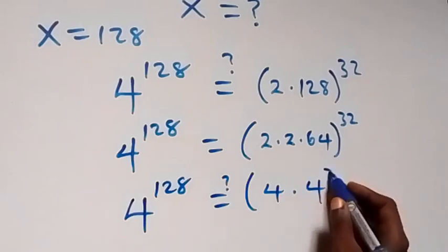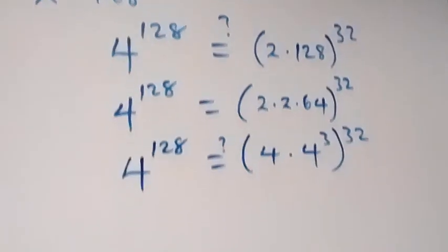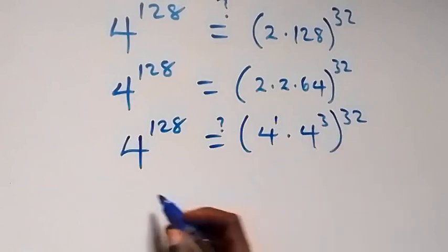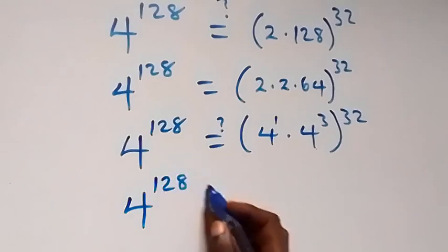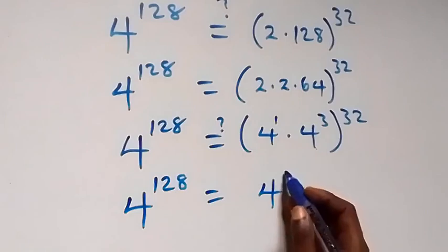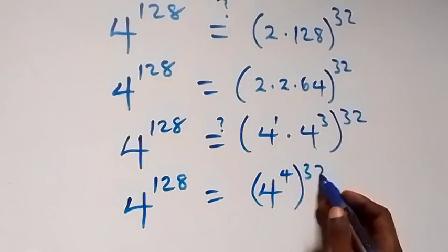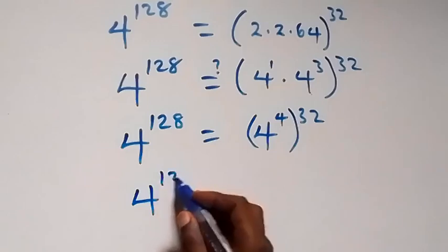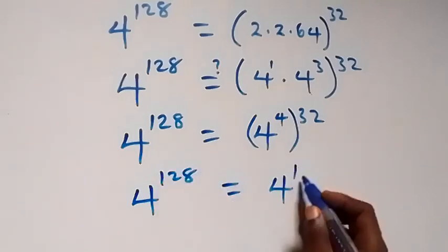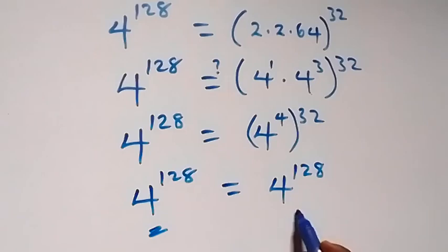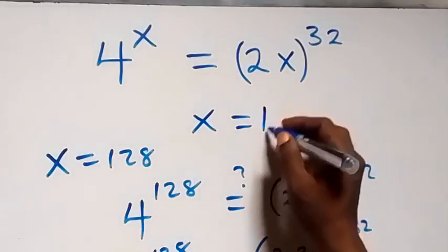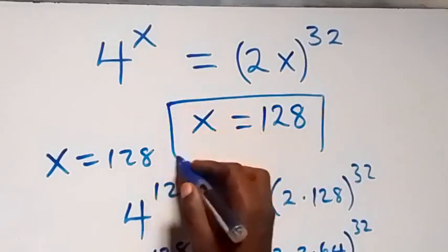We have 4 raised to power 128 equals to (4 × 64) raised to power 32. Using the law of indices we can write this as 4 raised to power 1 times 64 raised to power 32. Adding the powers, this becomes 4 raised to power 128 equals to 4 raised to power 128. The left hand side equals to the right hand side, and hence we conclude that x equals to 128 satisfies the given problem. Thank you for watching.